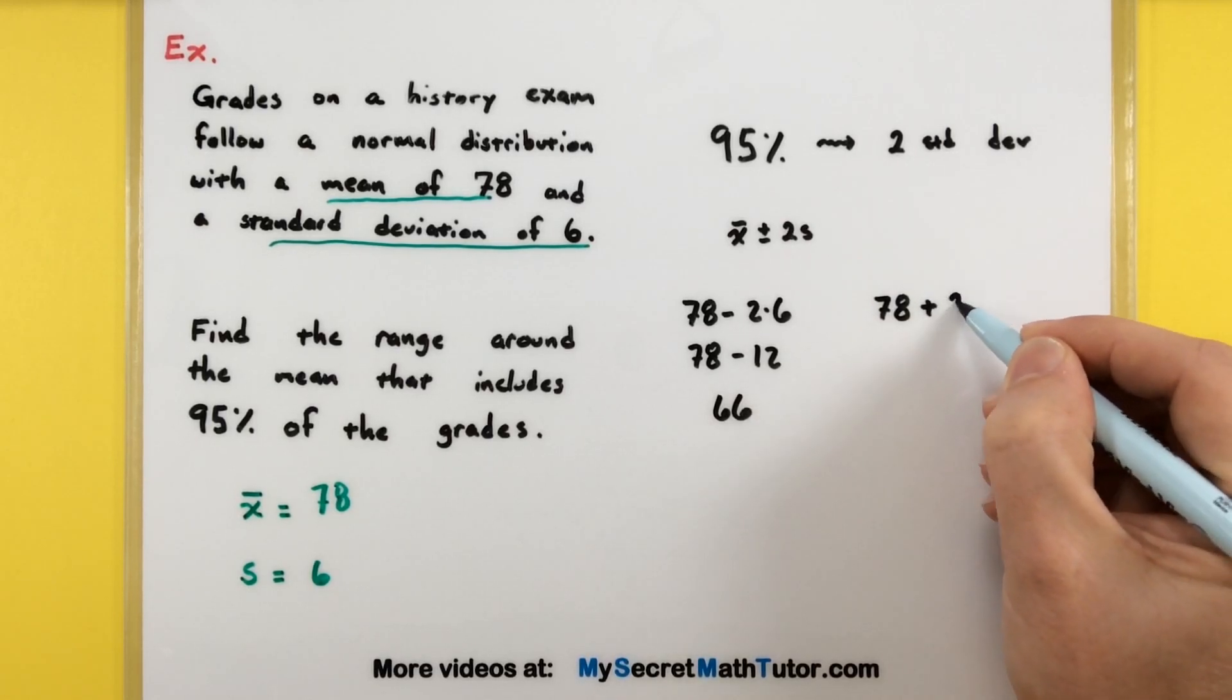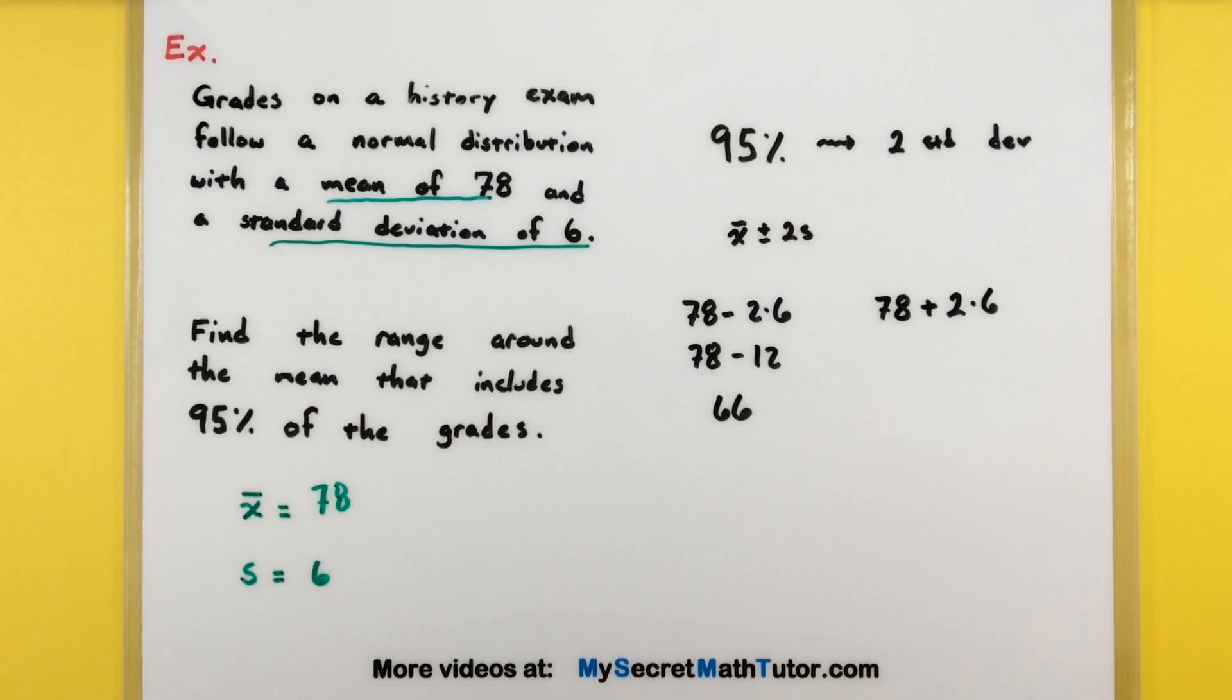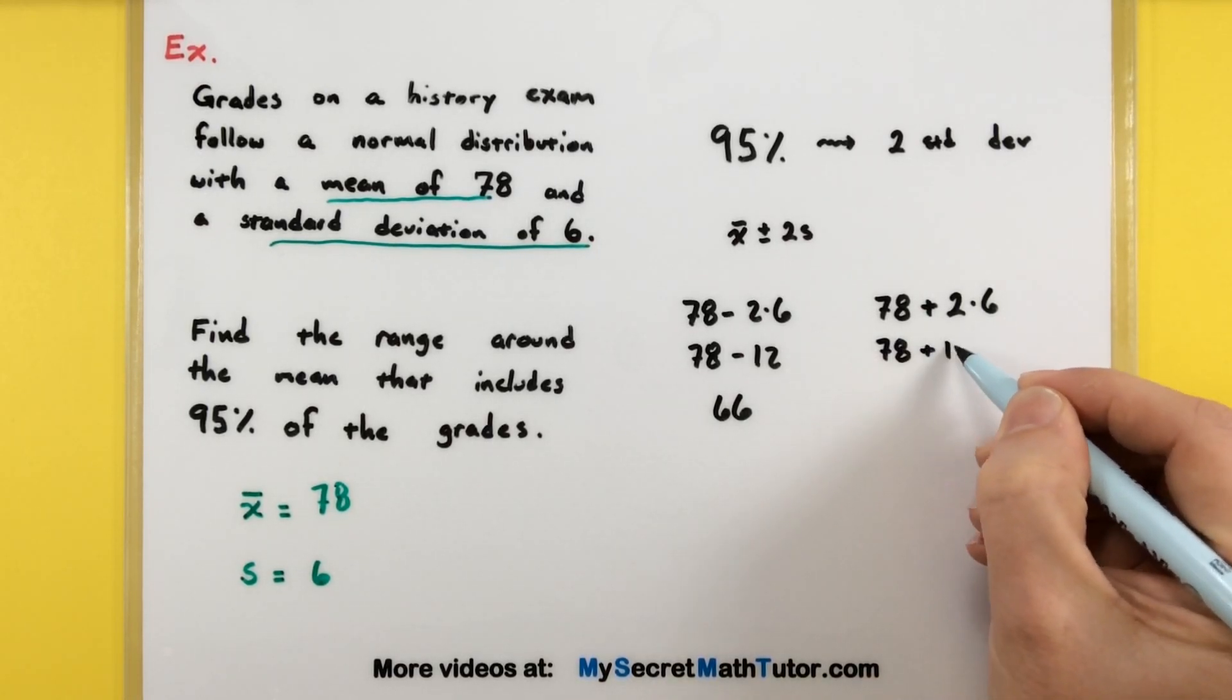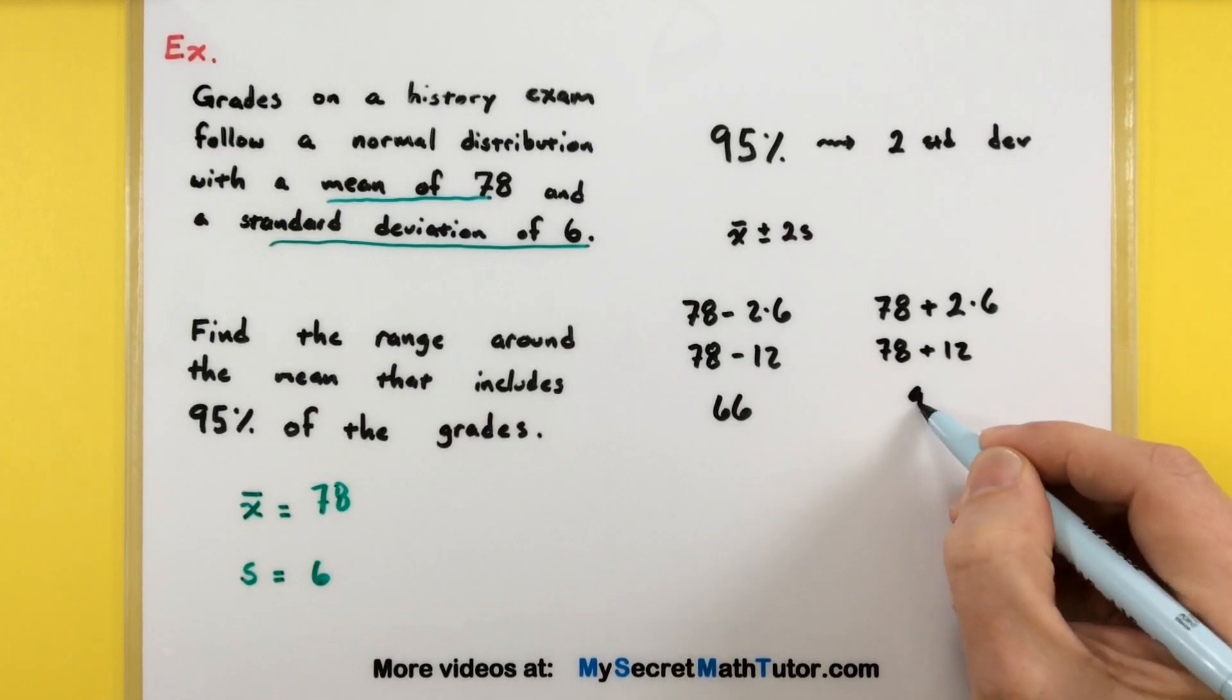To get the upper number, almost identical: 78, now we're adding two standard deviations, or plus 2 times 6. That's 78 plus 12, which gives us 90.